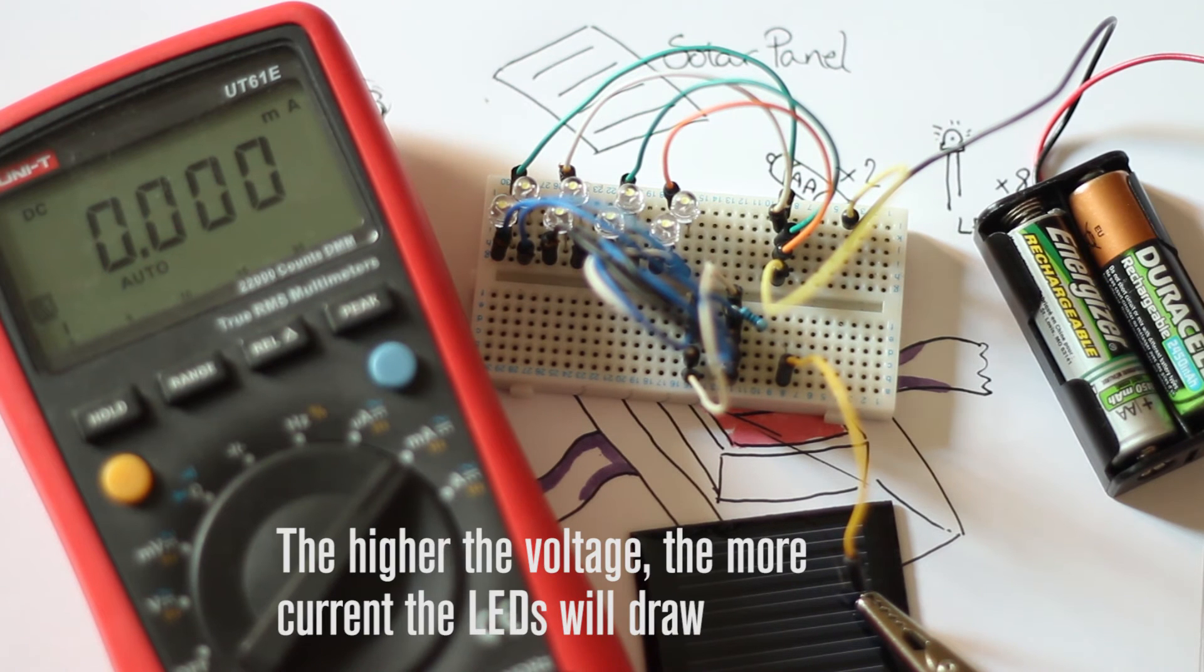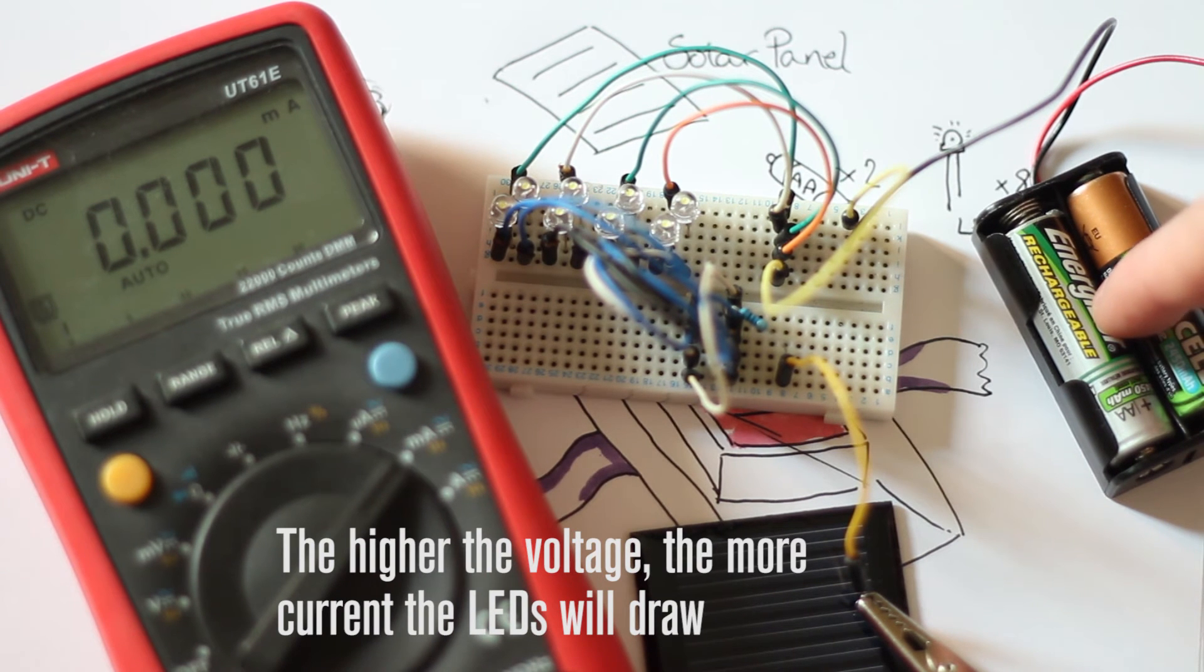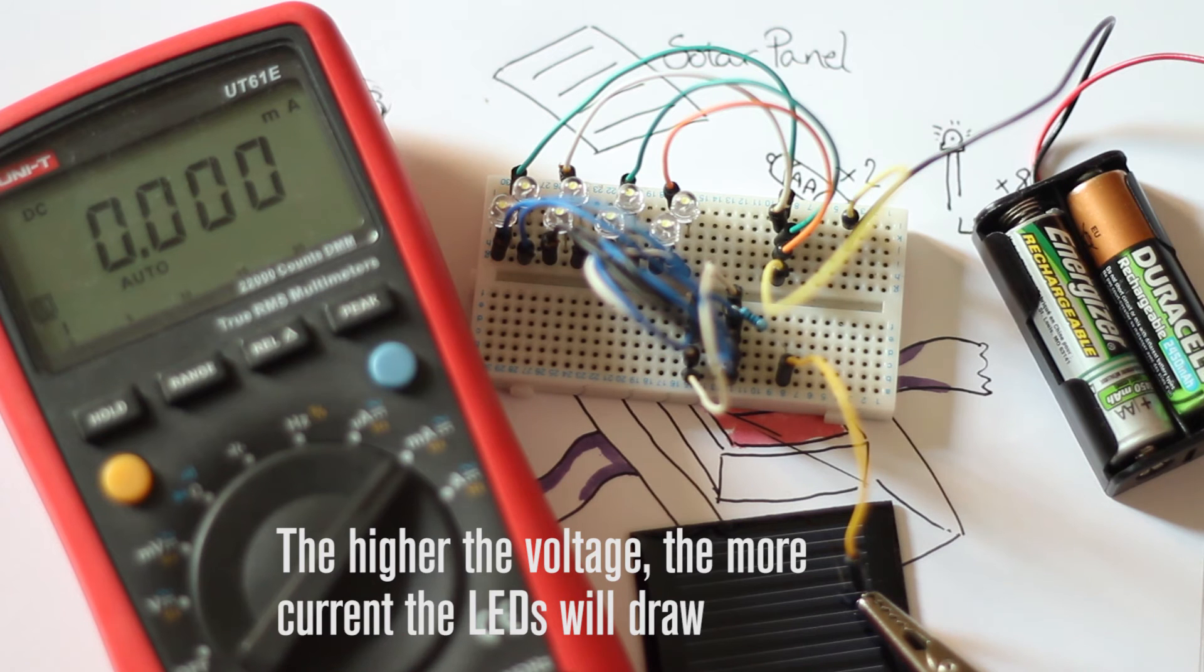If I were to stick 3 volts in there, the LEDs would draw more current, but we're rocking quite a lot lower than that. We have a 460 ohm resistor in there, so it should limit the current a certain amount.